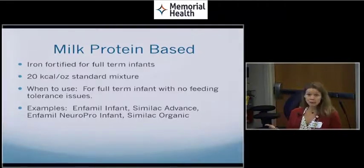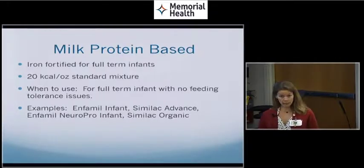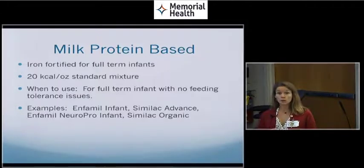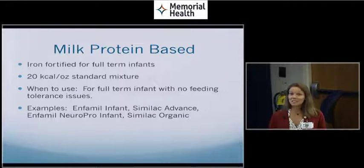Some examples of those formulas are going to be Enfamil Infant, Similac Advance, Enfamil Neuro Pro Infant, Similac Organic. I included the organic version just so that you would know there are organic options out there for parents that do want to have an organic formula. Sometimes with formulas it's definitely going to be specific to what a parent wants for their baby as well.